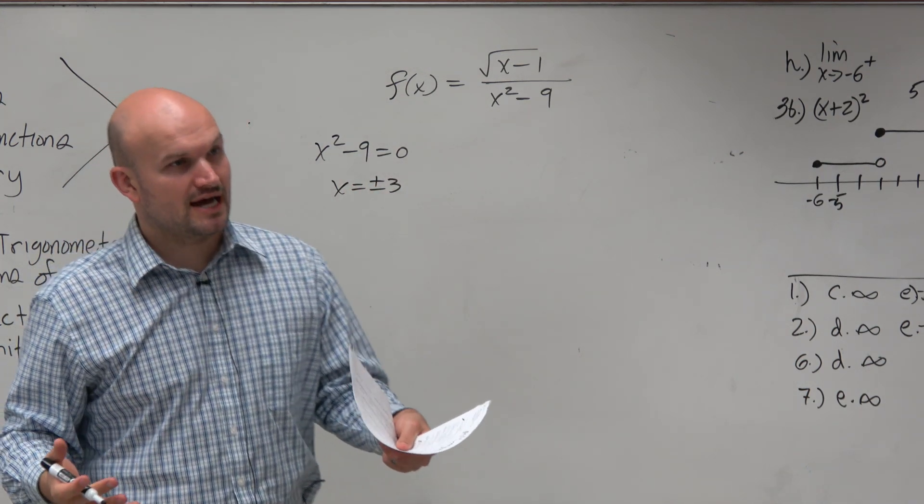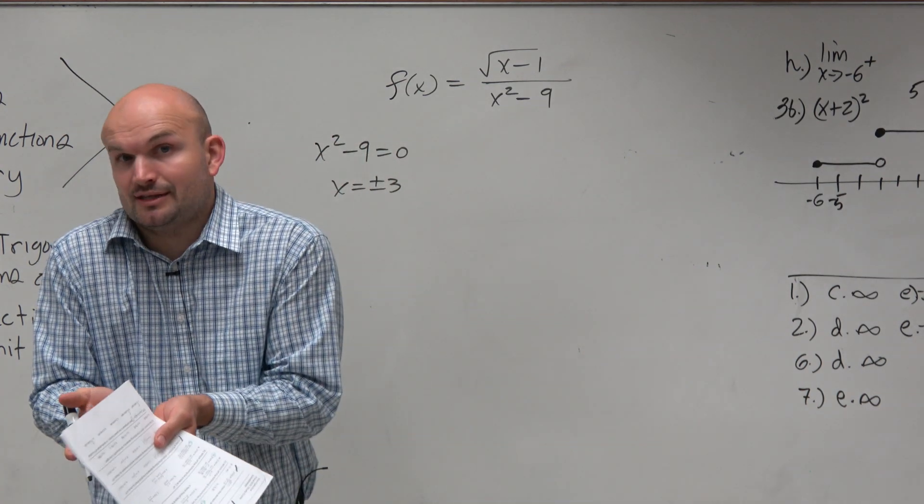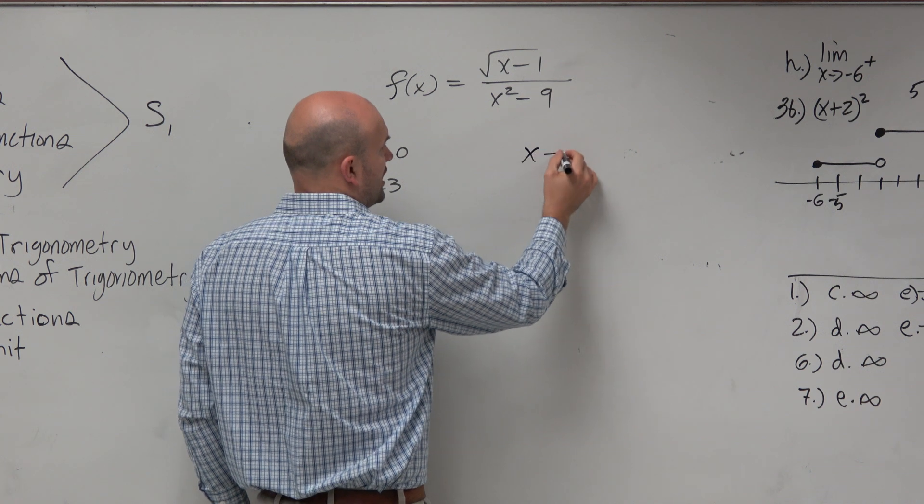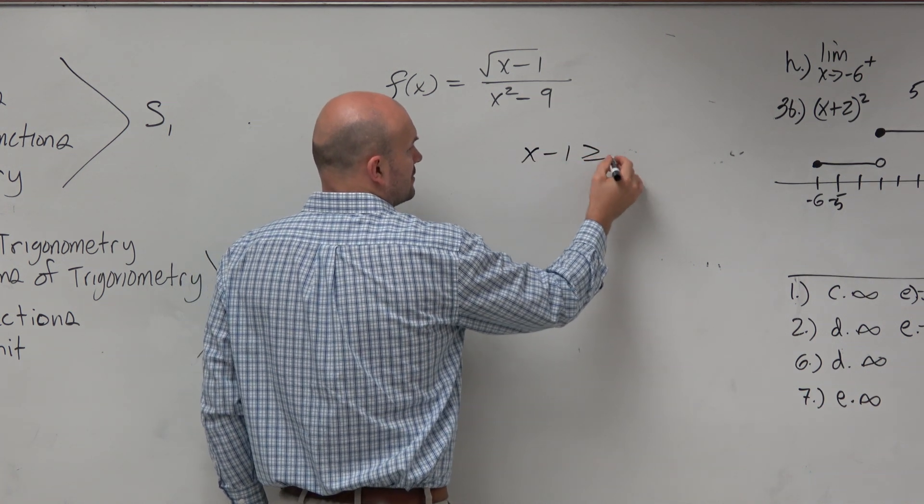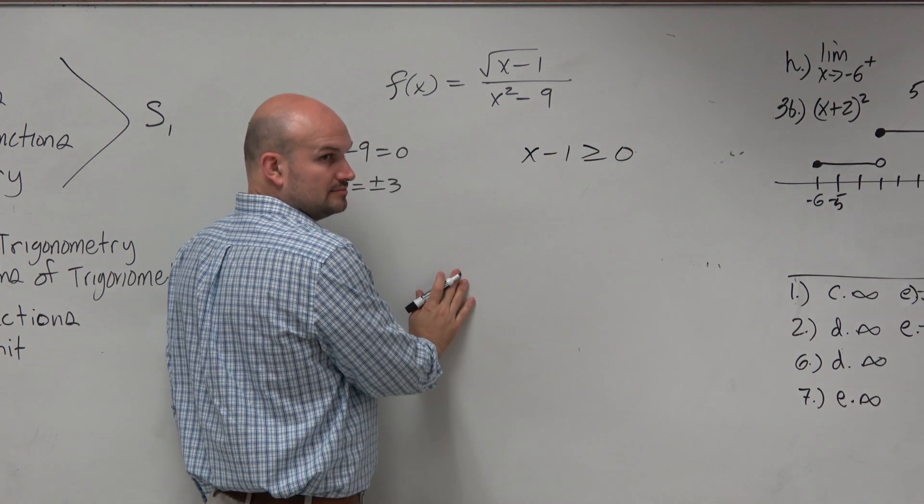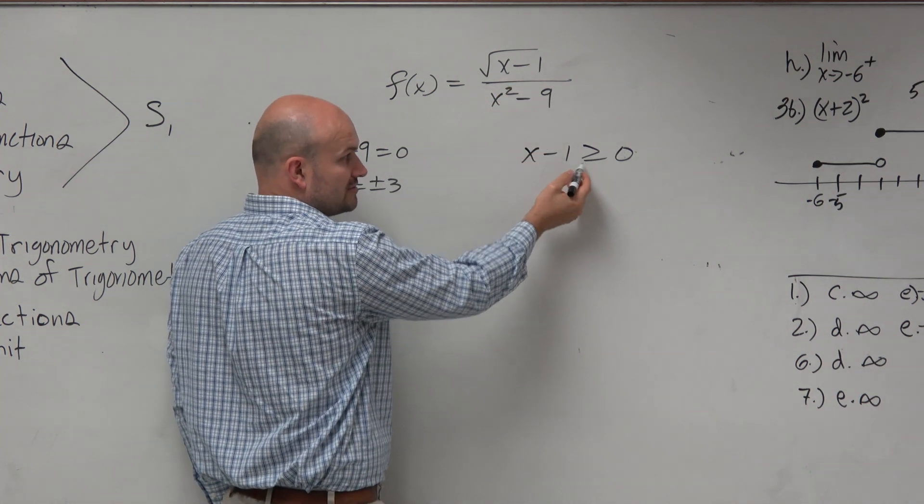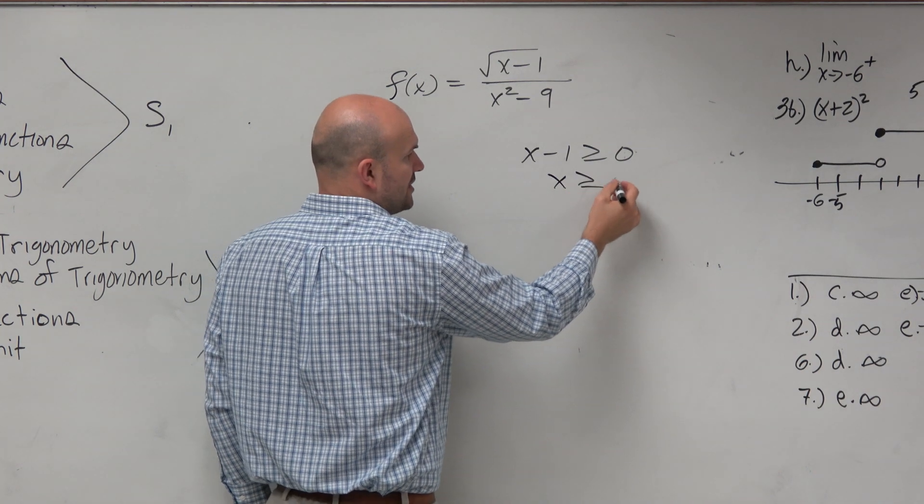The other thing is we have a square root, a radical. We can't take the square root of negative numbers, so everything under the radical has to be greater than or equal to 0. So we said x has to be greater than or equal to 0.